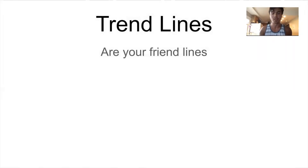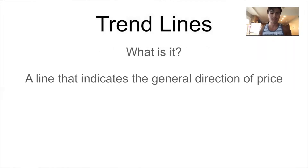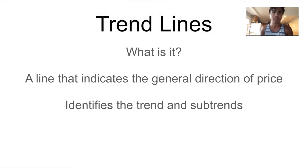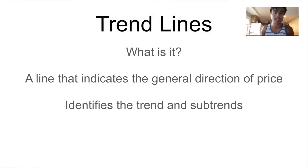Trend lines are your friend lines. So what is a trend line? A trend line is a line that indicates the general direction of price — is it going up, is it going down? It identifies the trend and the subtrend. You'll probably notice that there can be a huge uptrend going on but in the moment price is going down, or a huge downtrend but in the moment price is going up. Those are called impulses and corrections, or trends and subtrends.